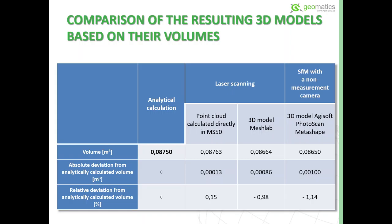Comparing the data, the analytically calculated volume is highlighted in bold in the table. We compare information from laser scanning and structure from motion. For laser scanning specifically, we compare two values: the volume of the point cloud calculated directly in the MS50 total station, and the volume calculated from the 3D model created in MeshLab. The scanning volume is larger because it contains not only the object itself but also the surroundings.